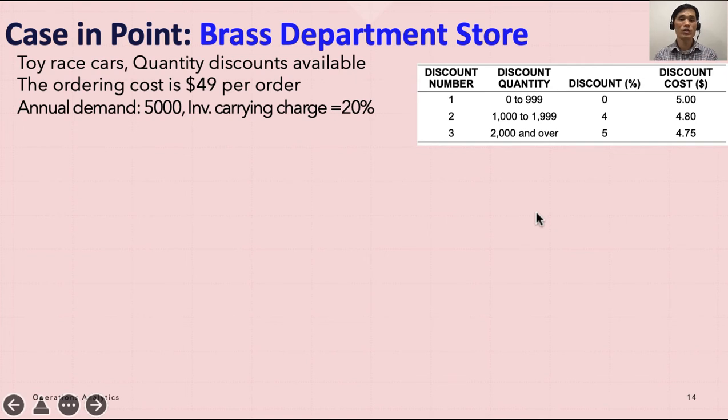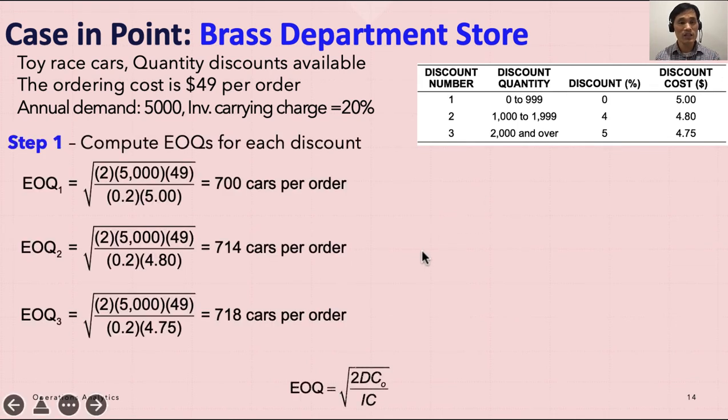Given this situation, what should we do? We want to follow these four steps. First step was to compute EOQs for each discount. We have different discount prices, and we have to use them for our calculation. We have 2DC, so two times the annual demand, which is 5,000, and the ordering cost was 49.